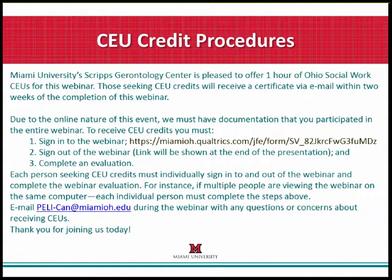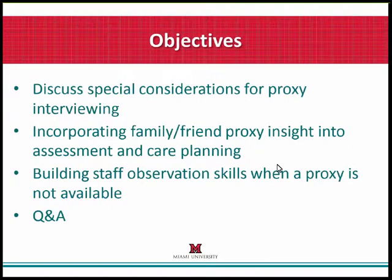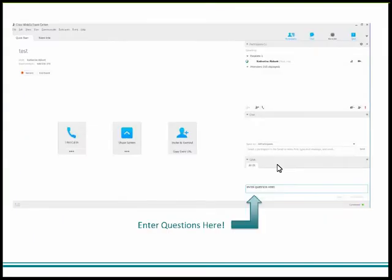During today's webinar, we will be discussing special considerations for proxy interviewing tips, for incorporating friend and family insights into assessments and care planning, and identifying ways to build staff observation skills when a proxy is not available. If you have questions throughout the webinar, please type them in the Q&A chat box, and we will answer your questions at the very end of the presentation. You can see on the screen where the arrow is — that's where you can type your questions, and the panelists will respond at the very end.